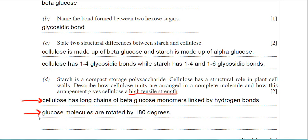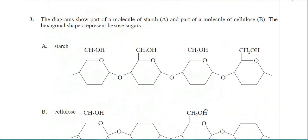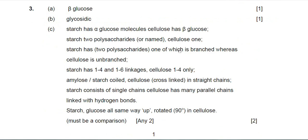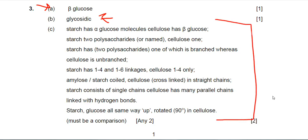That's the end of question three. If we have a quick look at the mark scheme: part A is beta-glucose, part B is glycosidic. For part C, as I told you earlier, there were a lot of options the examiner would allow for structural differences between starch and cellulose — please try and commit those to memory. Importantly, right at the bottom of the mark scheme, the examiner has said there must be a direct comparison — if you didn't make a comparison, you wouldn't have got the marks.